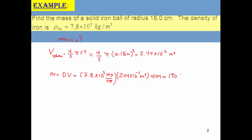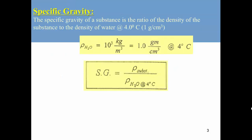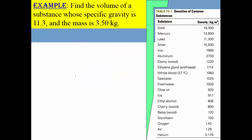Specific gravity is a ratio of the density of a substance to the density of water, and this uses the maximum density of water at 4 degrees Celsius, which is 1000 kilogram per cubic meter. Here we are asked to find the volume of a substance whose specific gravity is 11.3 and mass is 3.5 kilogram.